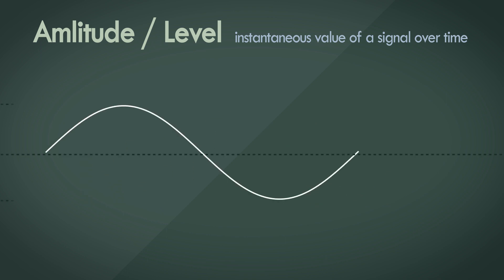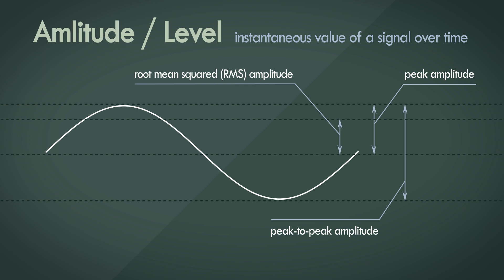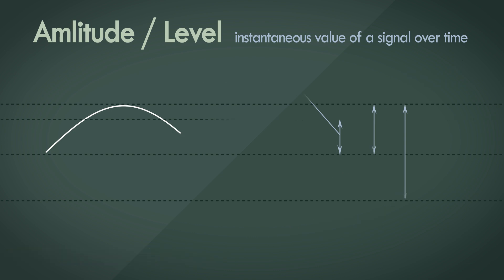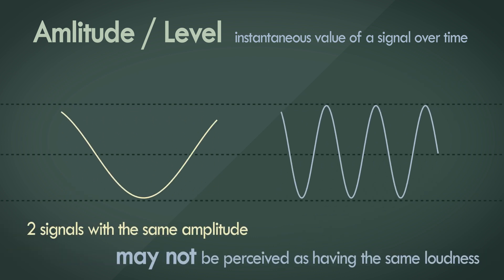We can measure the peak value, the peak-to-peak value, or the root mean squared (RMS) or average magnitude value of the signal, and all these measurements are done on the decibel scale. Generally, as the level of the signal increases, its perceived loudness increases as well. But it's not necessarily true that two different signals with the same amplitude can be perceived as having the same loudness, as we'll find out in the next video.